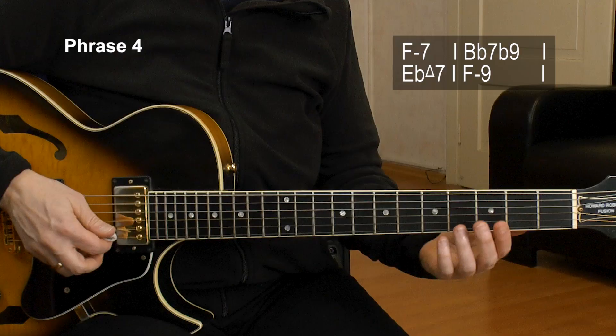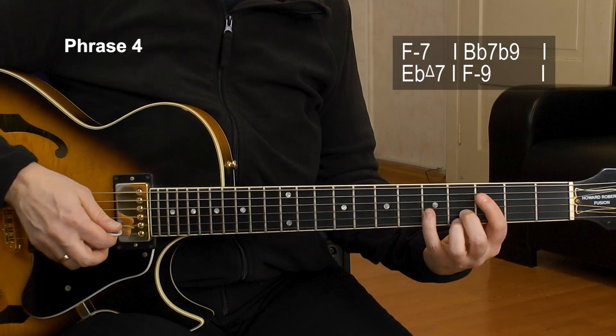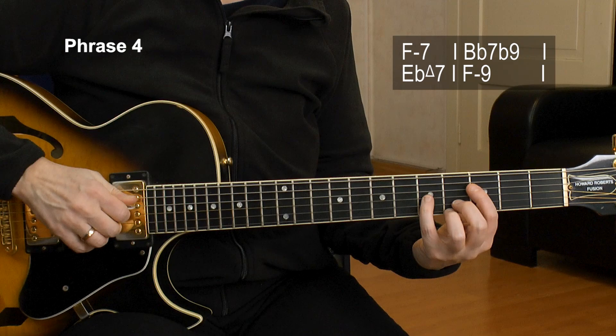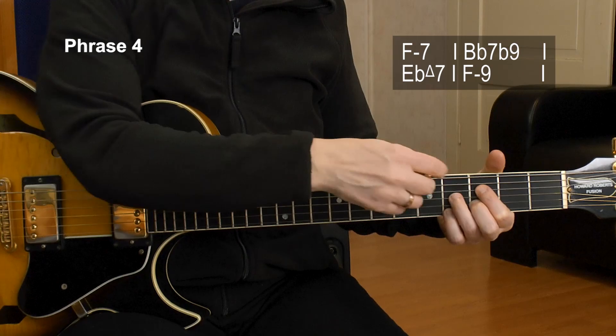All right, we start with the F minor 7th chord down here. Three, five, four, four, upper four strings. Play twice. Bb7b9 already as a diminished chord. We know this already. Three, four, three, four. And that's the 5th chord.